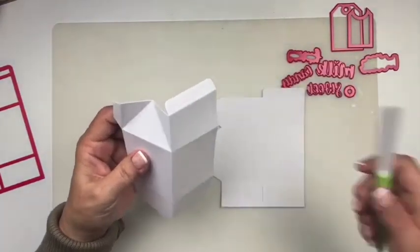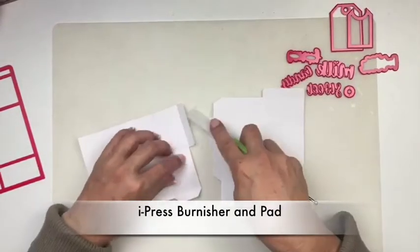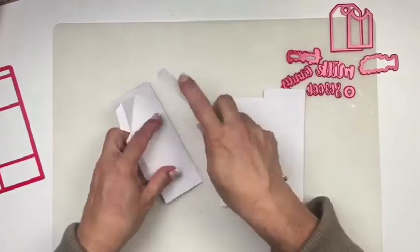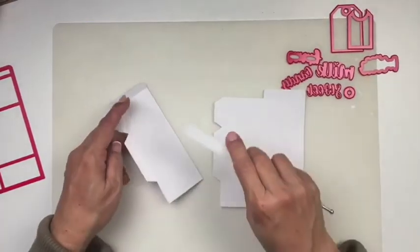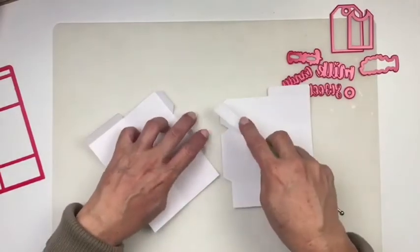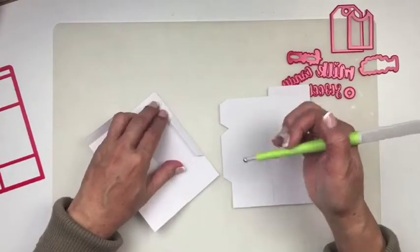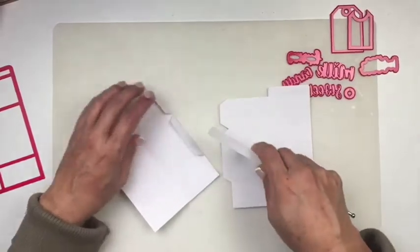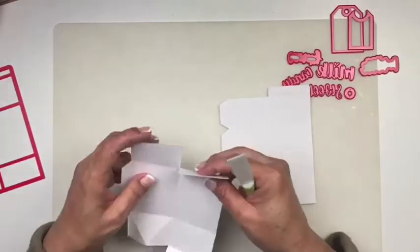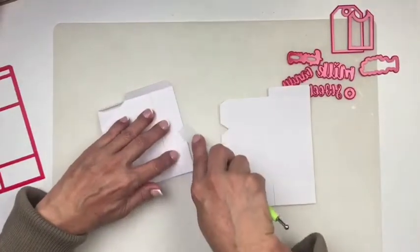Now I'm going to use our iCrafter burnisher to make sure all of these folds are nice and crisp. The iCrafter burnisher tool has a flat head burnisher like a bone folder on one side and a ball burnisher on the other and it comes with the foam pad to make shapes like formed flowers.